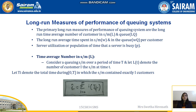The time-average number of customers in the system L is given by the equation: L = summation from i equals 0 to infinity of i times Ti divided by T. This equation is used to find the time-average number of customers that spend time in the line or in the queue.